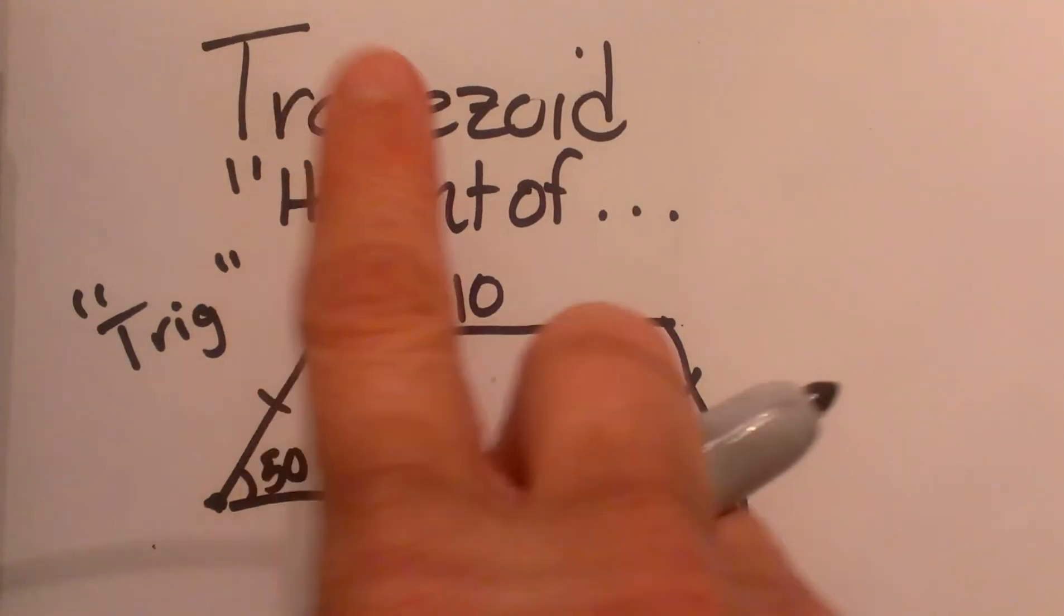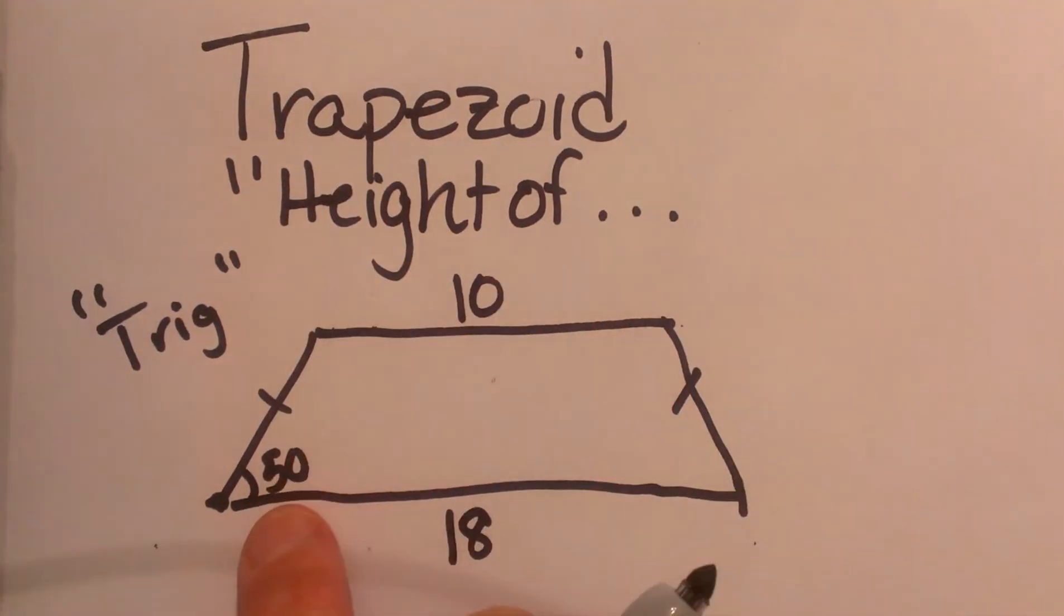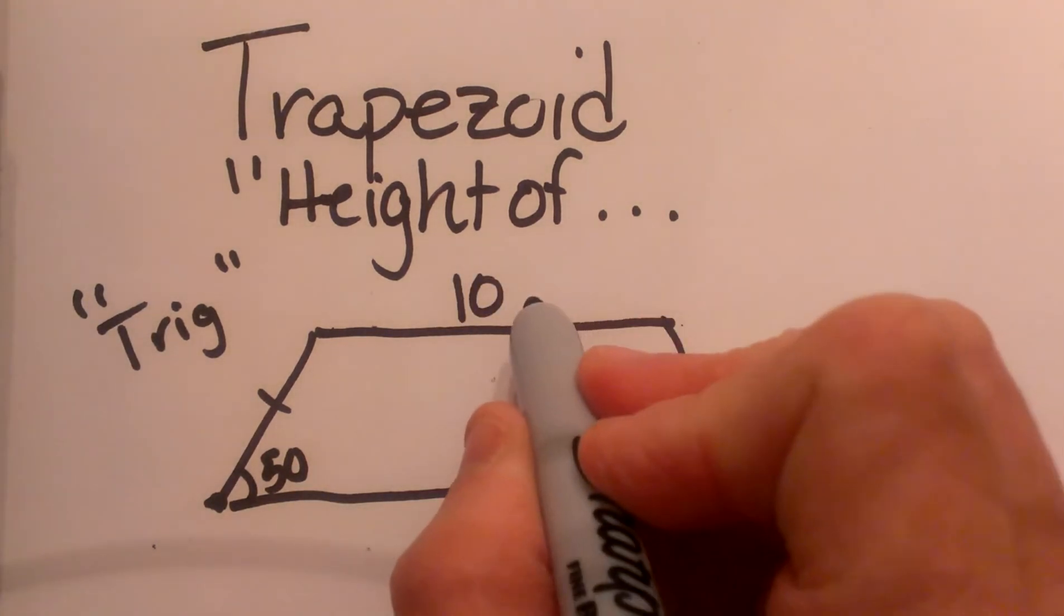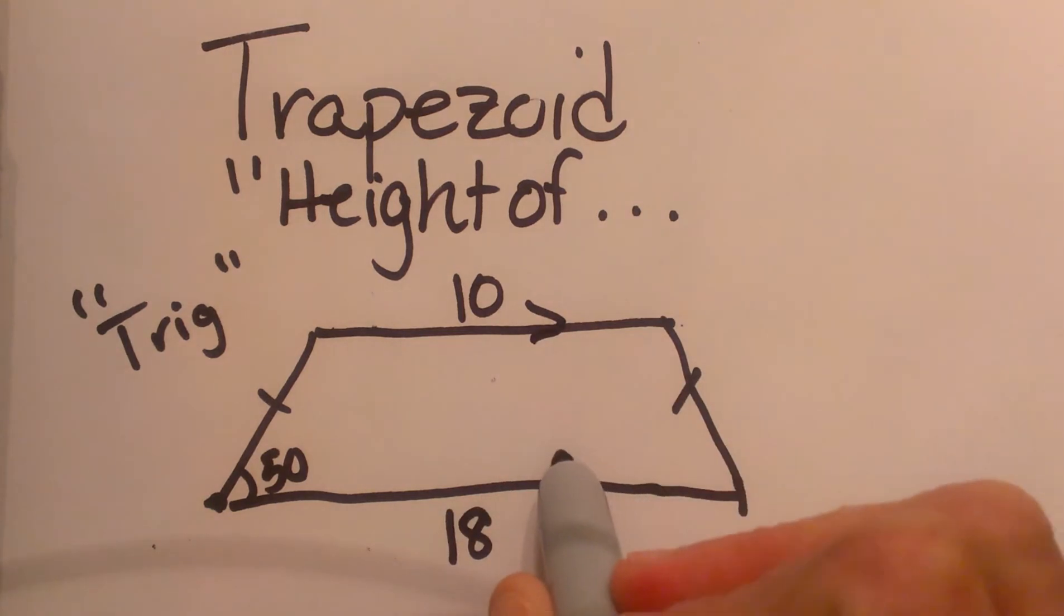Hey, we are going to look at how to find the height of a trapezoid using trig functions. So here is our trapezoid. We have two parallel bases, one that is 18 and one that is 10.